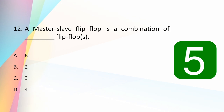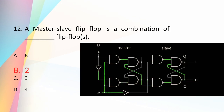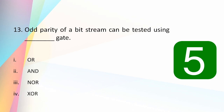A master-slave flip-flop is a combination of how many flip-flops: six, two, three, or four? The answer is two. A master-slave flip-flop has a master flip-flop and a slave flip-flop, where the slave works based on the action of the master flip-flop.